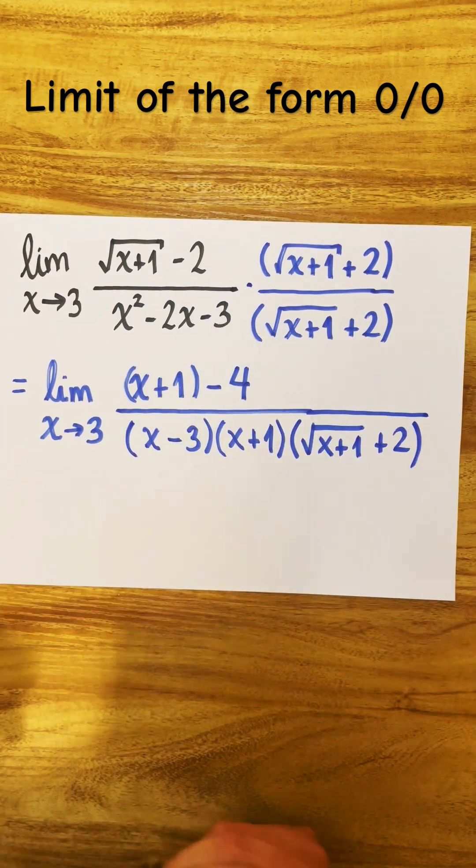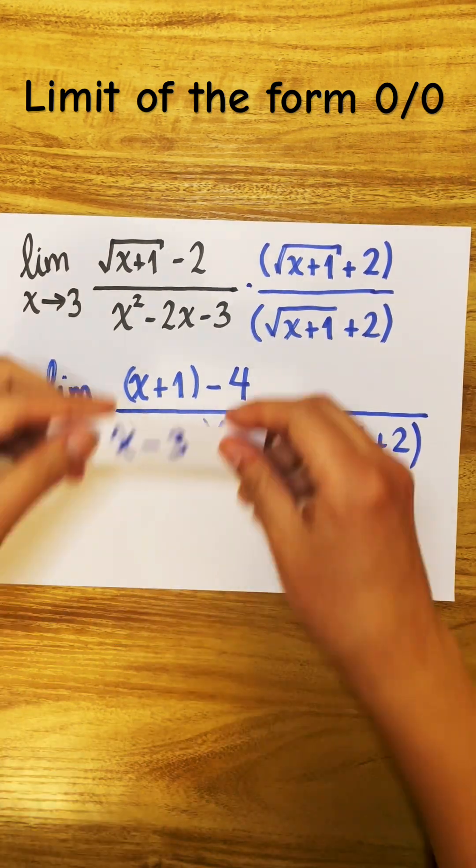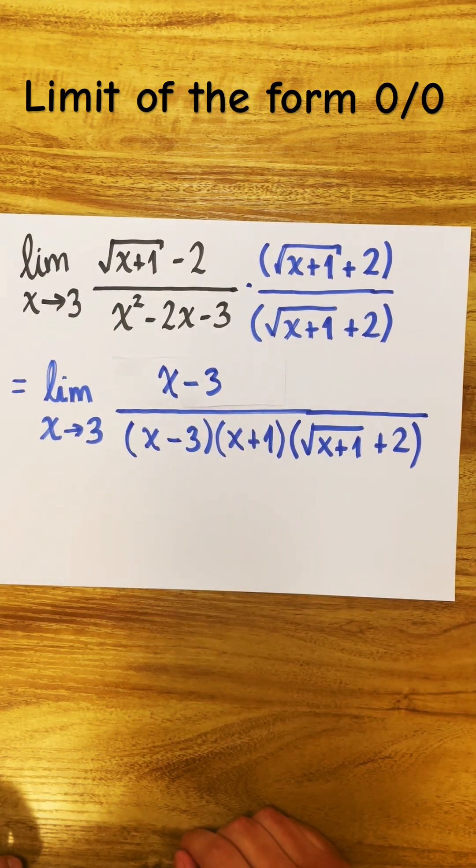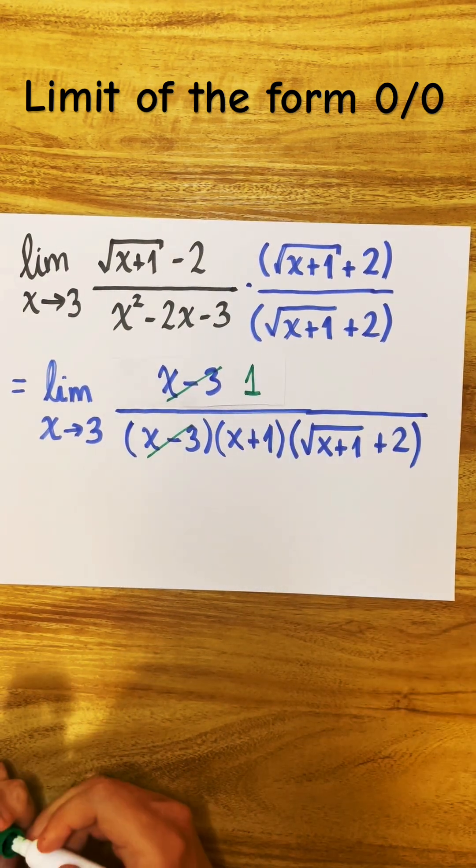Now, it's the step of simplify. x plus 1 minus 4 is x minus 3, and now we can cancel x minus 3 on top and bottom.